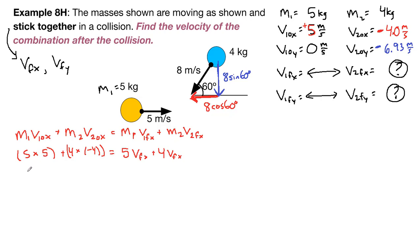5 times positive 5 plus 4 times negative 4 is equal to 5 v final x plus 4 v final x. So, we have 25 minus 16 is equal to 9 v final x. We divide both sides by 9. We have 9 divided by 9, which is 1.0 meters per second.